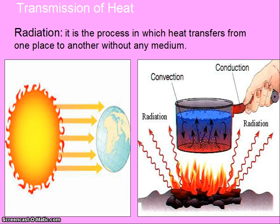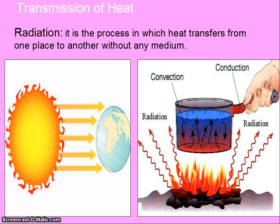Radiation. It is the process in which heat transfers from one place to another without any medium. The example of radiation is the earth getting heat from the sun. The sun is far away from the earth; it emits heat radiations that are received by the earth, and the atmosphere of the earth gets heated. This process is known as radiation.